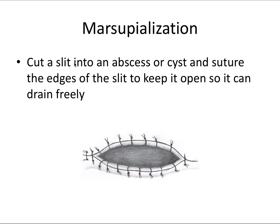Marsupialization is a bit different. This involves cutting a slit into an abscess or cyst and then suturing the edges of the slit to keep it open so that it can drain freely. It can be used for incision and drainage procedures where you want to keep the lesion open to the oral cavity to relieve pressure and allow it to drain. Alternatively, you could insert a physical drain and suture it closed, or suture the edges open to prevent primary closure — physically and purposely allowing the lesion to drain.